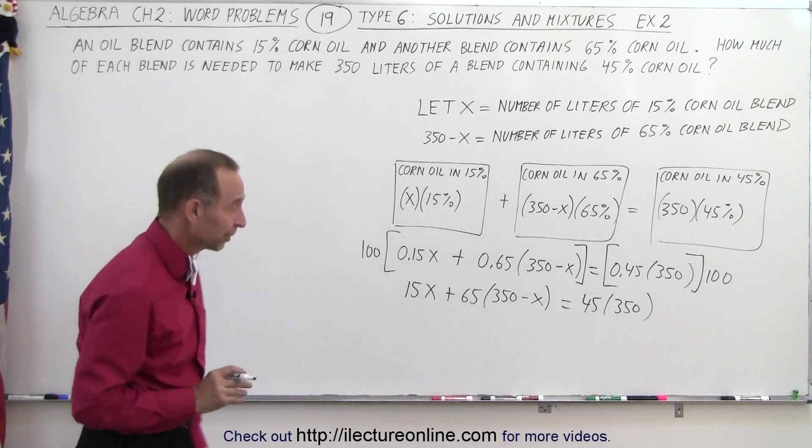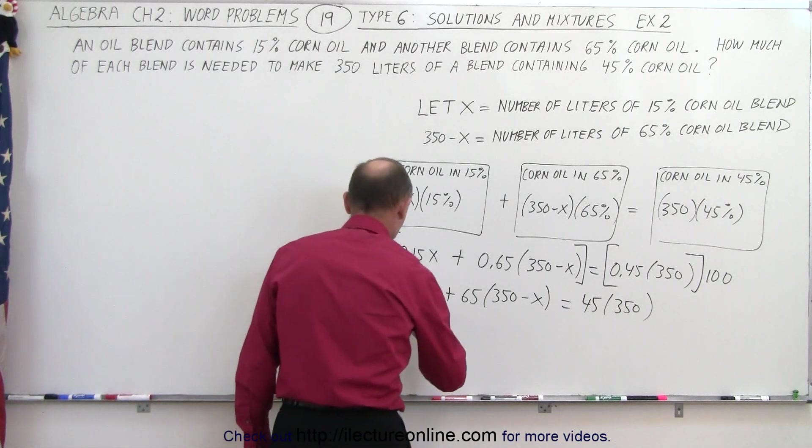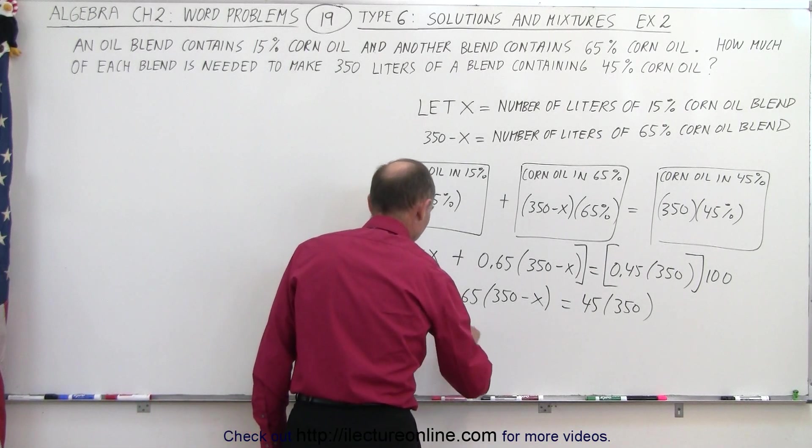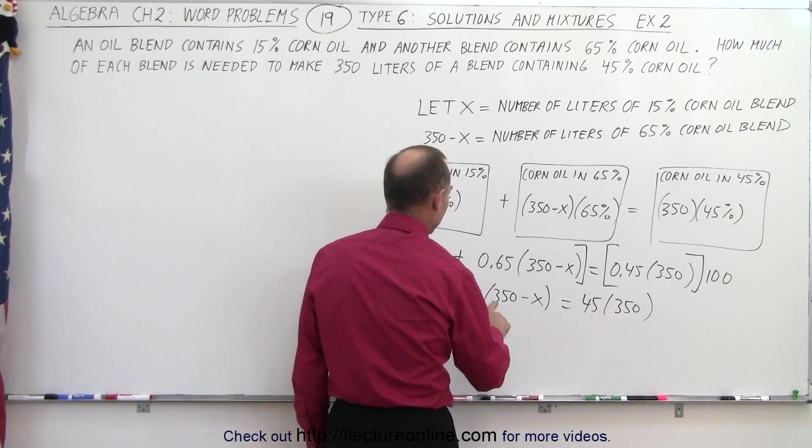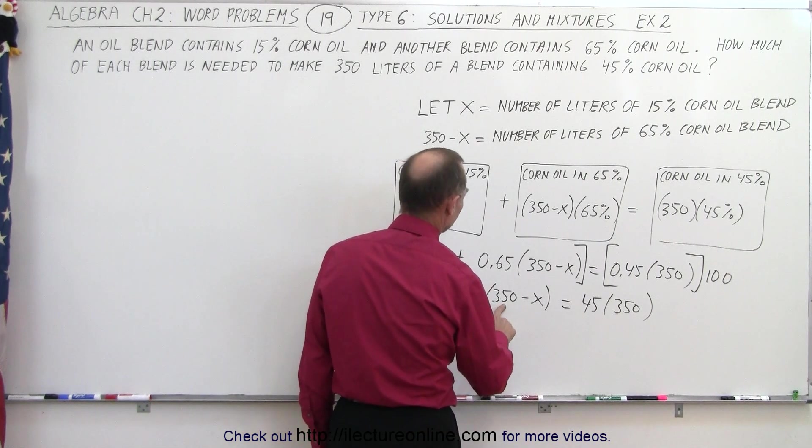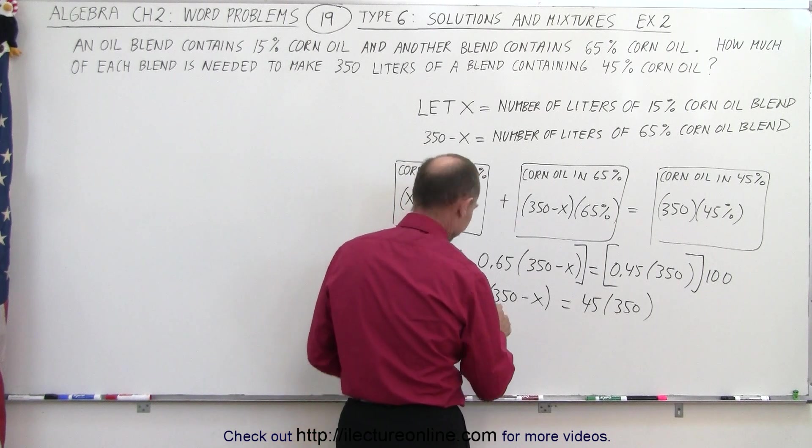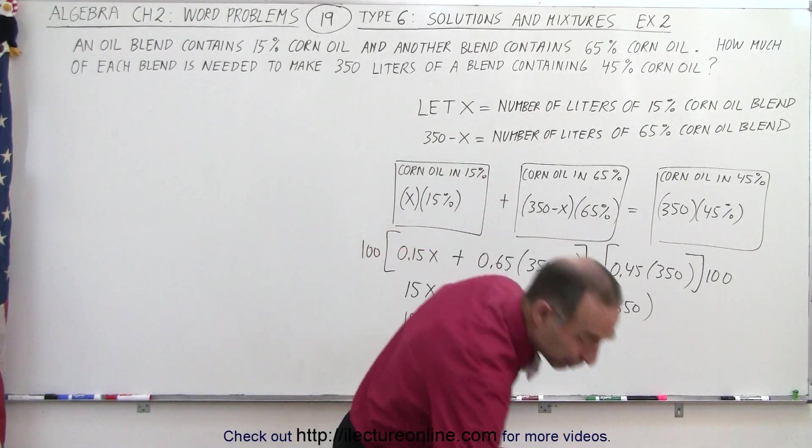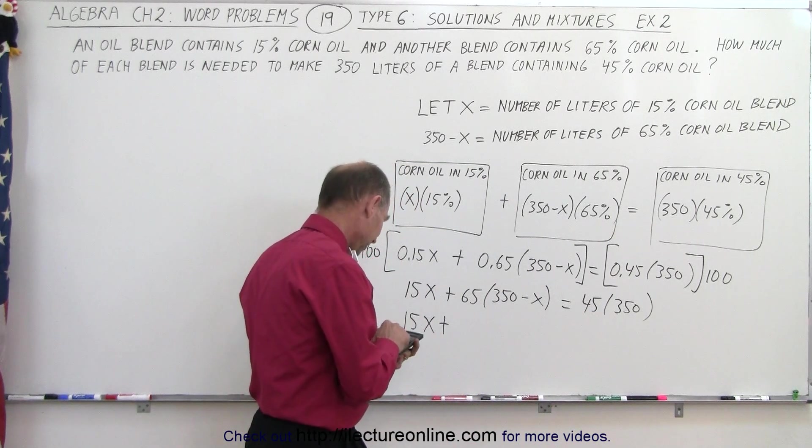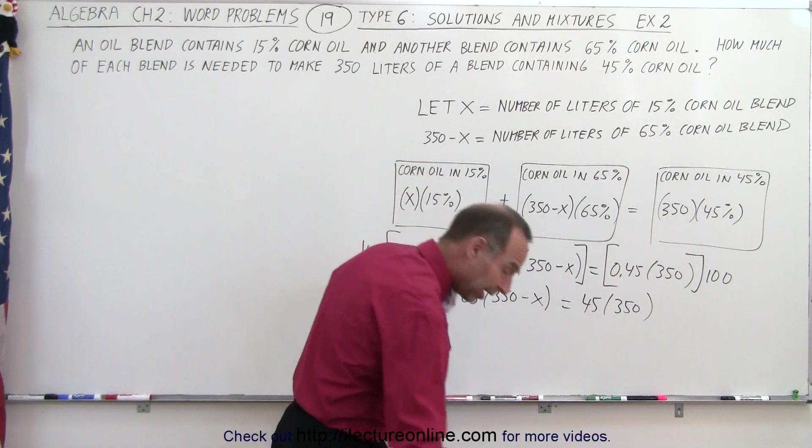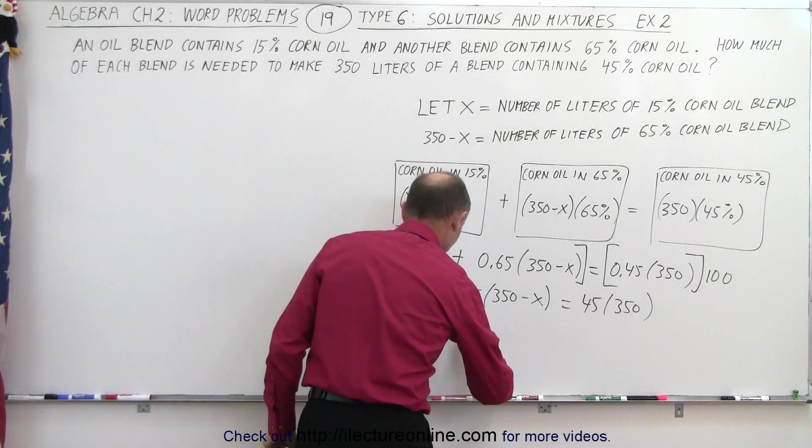Now we can get rid of the parentheses. So this becomes 15x plus 65 times 350. Let's see here, I'm going to resort to a calculator. 350 times 65, that's 22,750. A little bit faster that way.